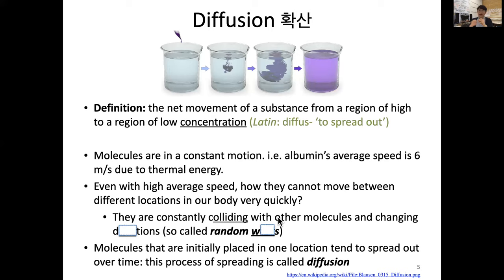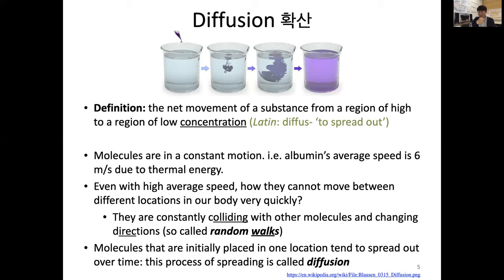It's not free space. Think about a single albumin molecule inside blood plasma — it is constantly colliding and interacting mostly with water molecules. Once they collide, they change direction, so it's not always unidirectional. This random changing of direction is called, from a mathematical point of view, a random walk. It's like thinking about a drunk person who came out and walked around — they can move on average, but the direction is randomized, and eventually the average displacement remains the same.